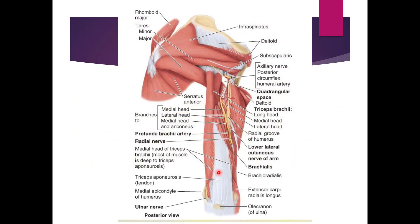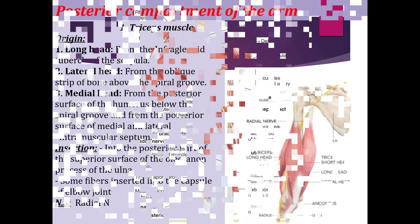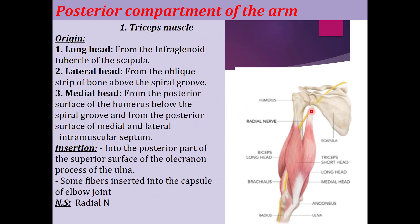In this diagram you can see the triceps muscle — the long head, the medial head, and the lateral head. The long head originates from the infraglenoid tubercle of the scapula. The lateral head originates from the posterior surface of the humerus above the spiral groove. The medial head of the triceps originates from the posterior surface of the humerus below the spiral groove, and from the posterior surface of the medial and lateral intermuscular septum.